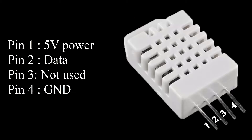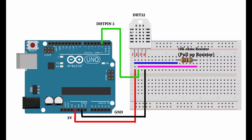The sensor has 4 pins: pin 1 is for 5V power, pin 2 is for data, pin 3 is not used, and pin 4 is for ground.